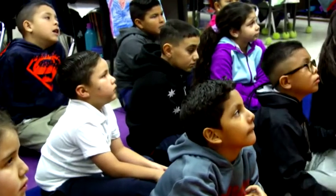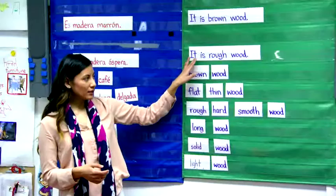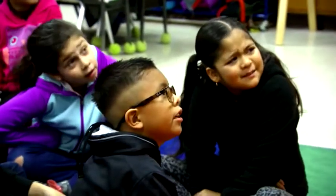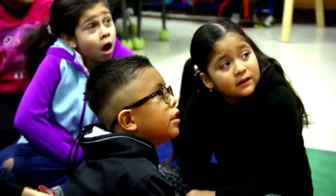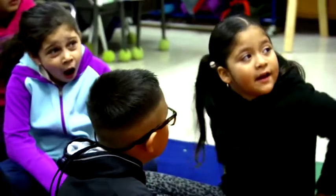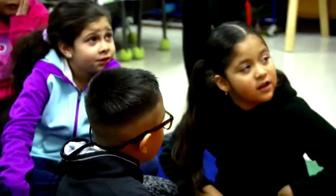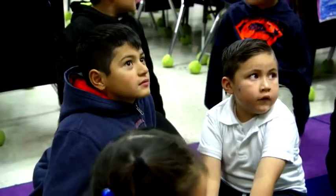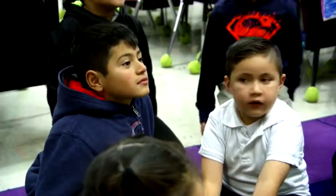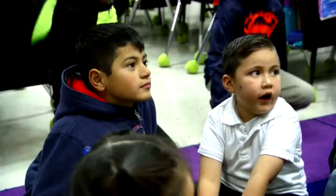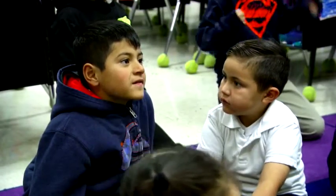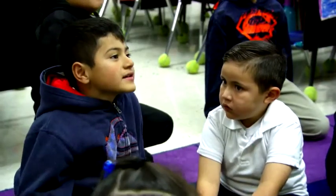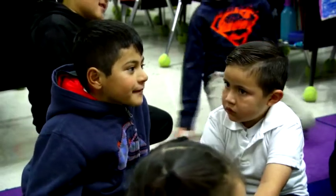Can you think of another sentence in English? Students respond: It is brown wood. It is flat wood. It is rough wood. It is smooth wood. It is soft wood. Hard wood. It is flat and brown wood. Students practice constructing descriptive sentences in English using the adjective-before-noun structure.